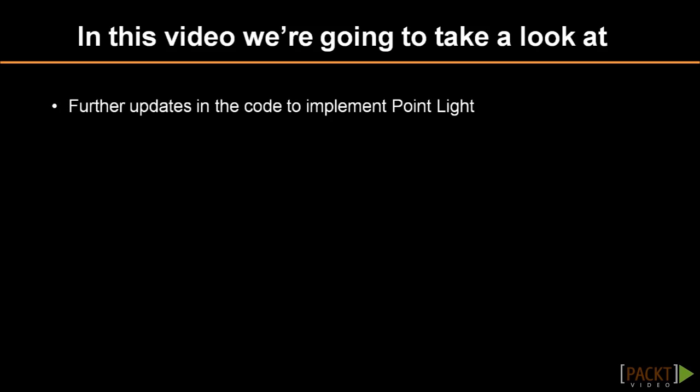Hello everyone. This video is entitled Point Light, and in this lesson we will be implementing the point light. A point light is different to a directional light as it casts light in all directions from the source. In games it is commonly used as a light on a wall or a candle lighting up a dark cave.